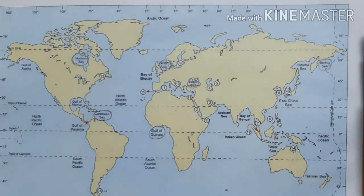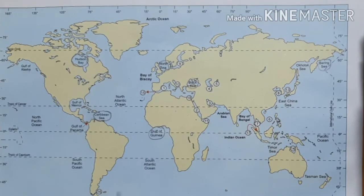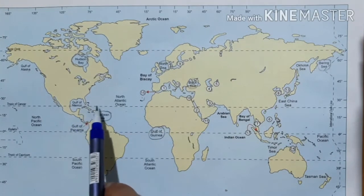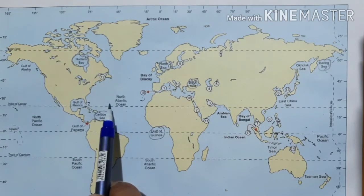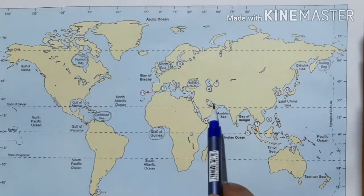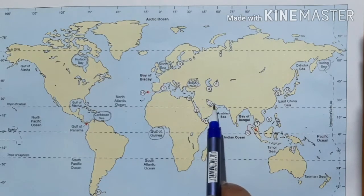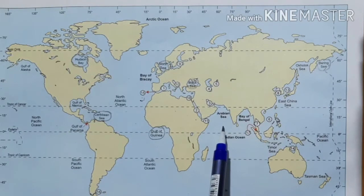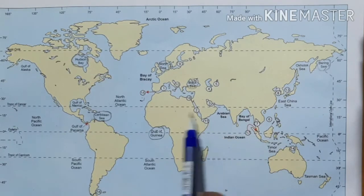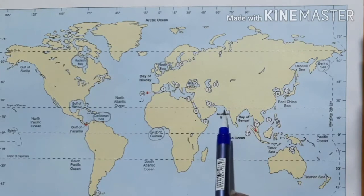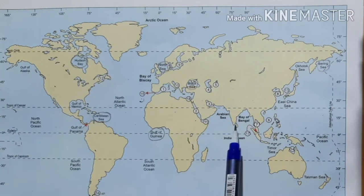Another type of water body is the gulf. Gulfs are enclosed by land on three sides and deep inside the continent, having only a narrow opening towards the main ocean. Examples include the Persian Gulf and the Gulf of Mexico. In India, there are many gulfs like the Gulf of Kachchh, Gulf of Khambhat, and the Gulf of Mannar.